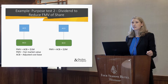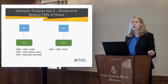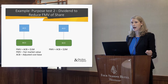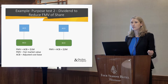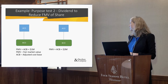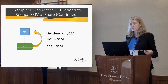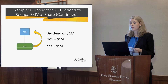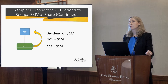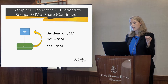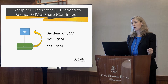Company A then decides to invest an additional $1 million into Company B and receive shares worth $1 million back. So now the adjusted cost base and fair market value of the shares is $2 million. Company B then decides to pay a dividend of $1 million up to Company A, thereby reducing the fair market value of Company B's shares back to $1 million.